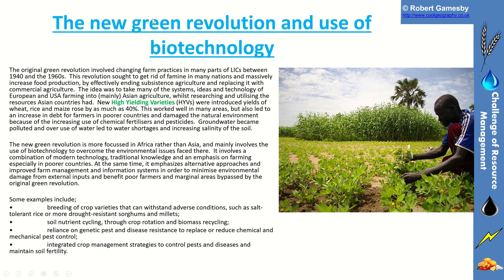The next topic the exam board wants you to know about is the new green revolution and the use of biotechnology. The original green revolution involved changing farming in poorer countries, mainly between 1940 and the 1960s. The idea was to transfer technology using aid money from rich countries like Europe and the United States, mainly into Asian agriculture in countries like India. A key feature was biotechnology: high-yielding varieties of wheat, rice and maize were developed, seeds were distributed to farmers, and that increased yields by as much as 40 percent.